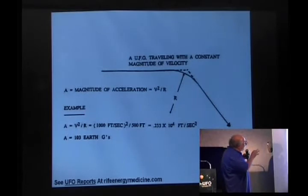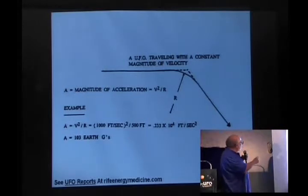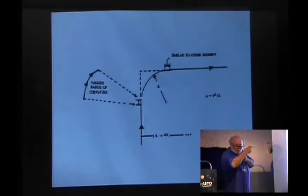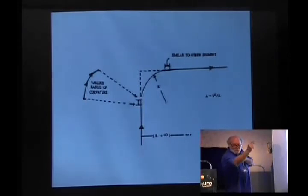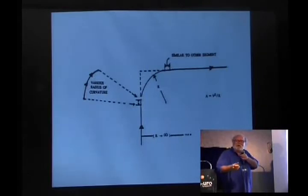There have been people that have witnessed on radar situations of basically right-angle turns, and if you do the calculations I just talked about — characteristic radius of curvature and the speed they went into the turn — they were doing 5,000, 10,000, 15,000 Gs in the turn. Obviously, you don't survive that. You're organic goo on the wall.